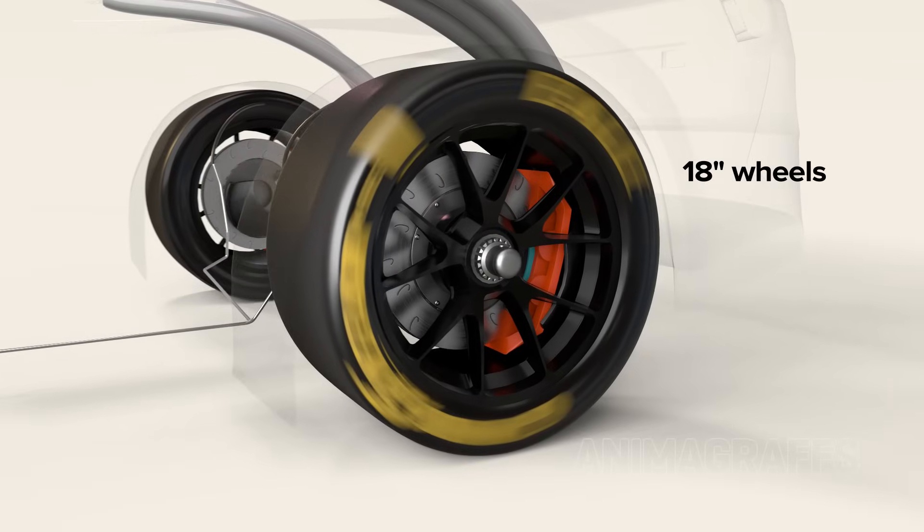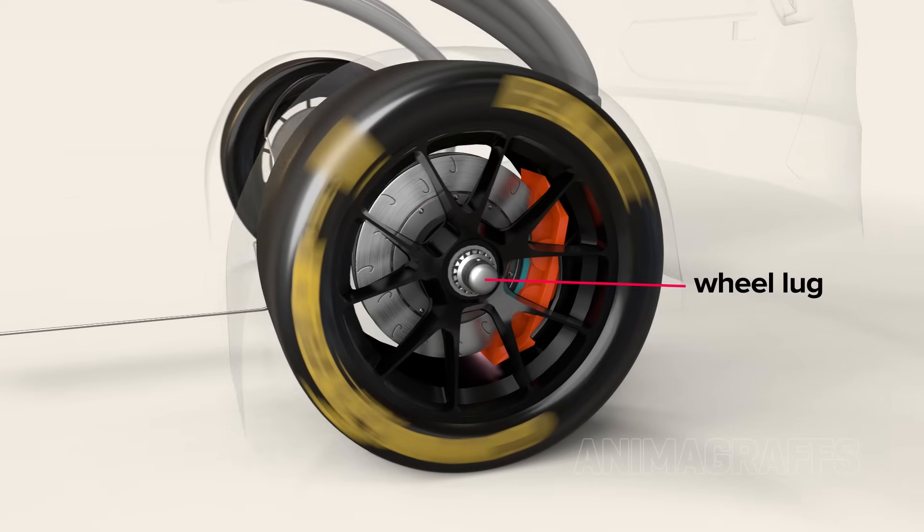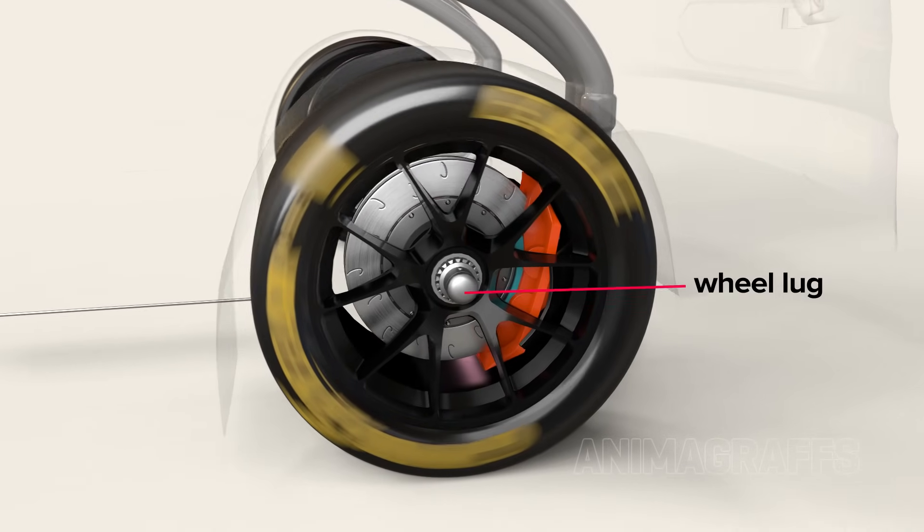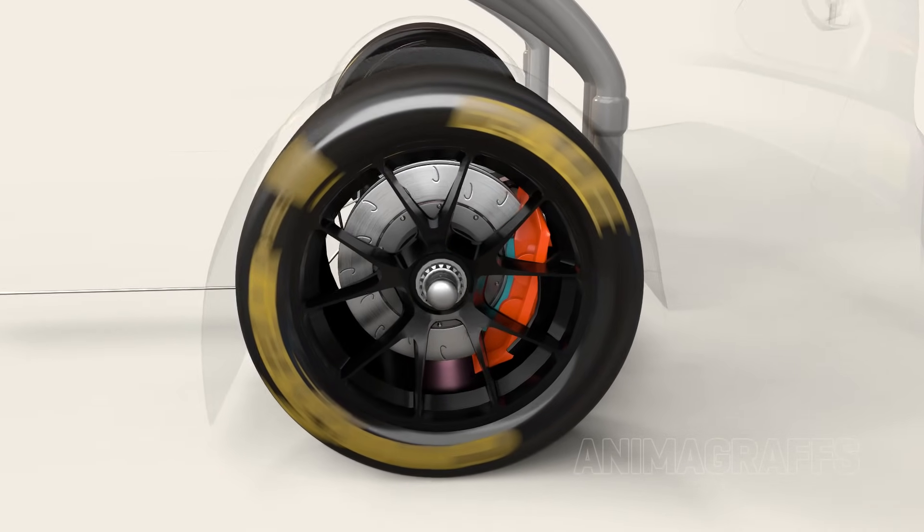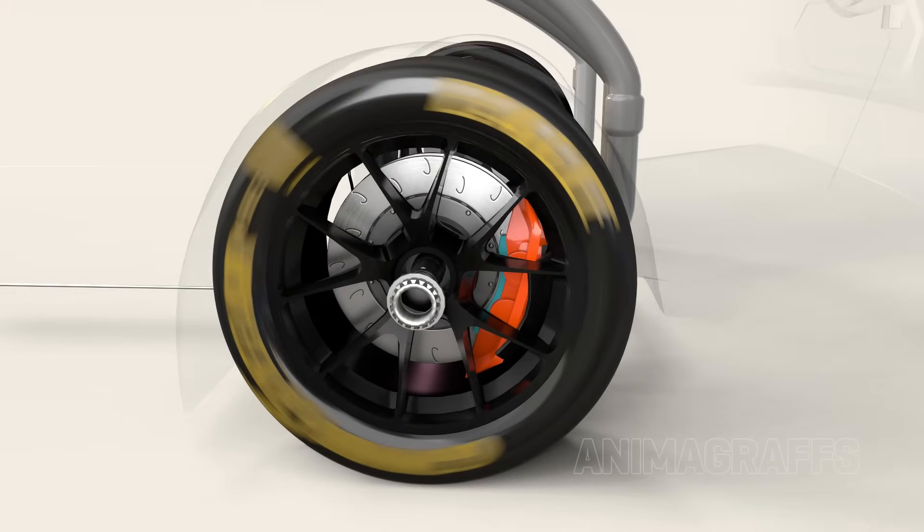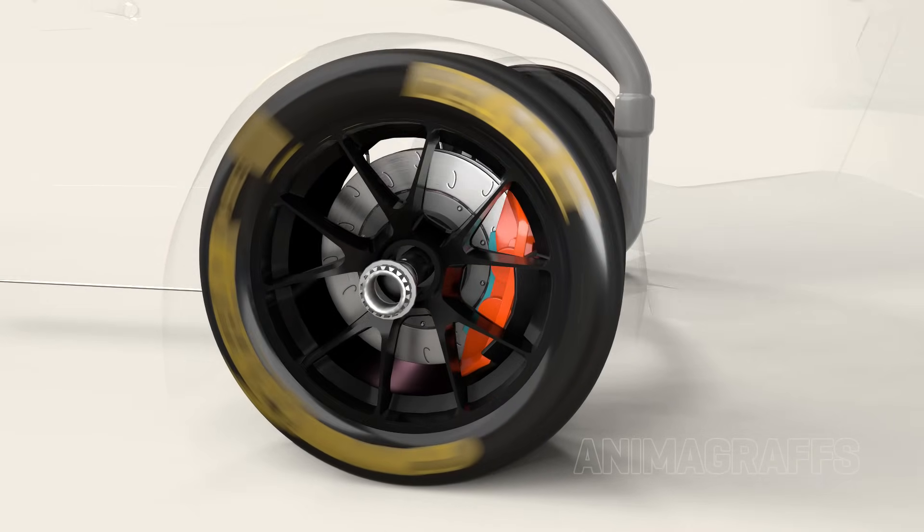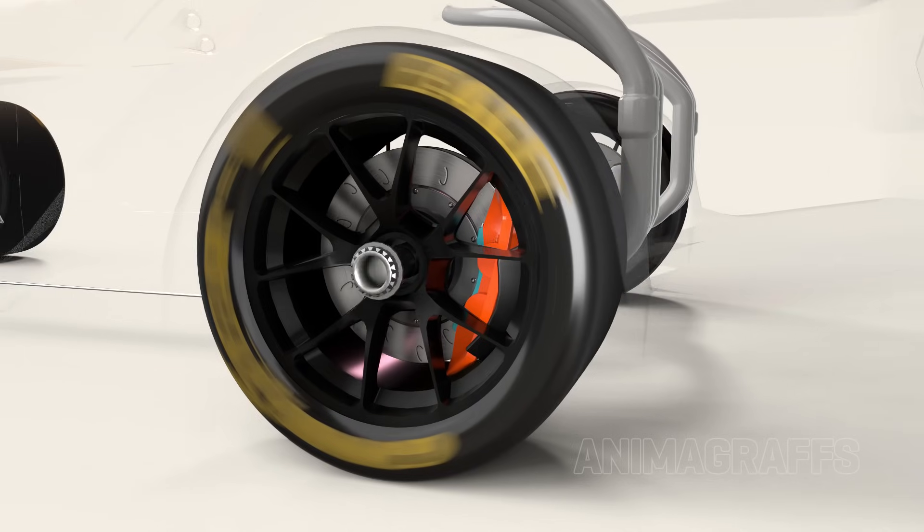The 18 inch aluminum wheels are secured to the hub with a single wheel lug. Spring-loaded retention pins keep the lug securely in place. A specially designed wheel gun pushes these pins down when removing the lug.